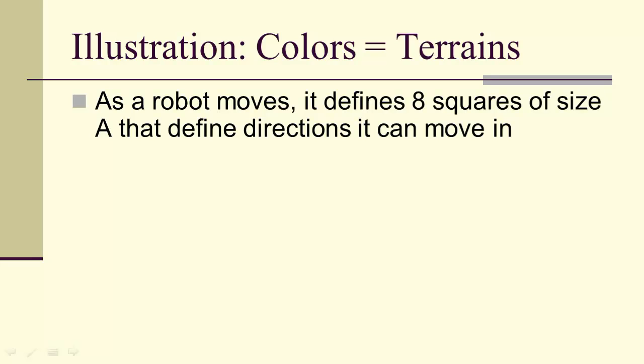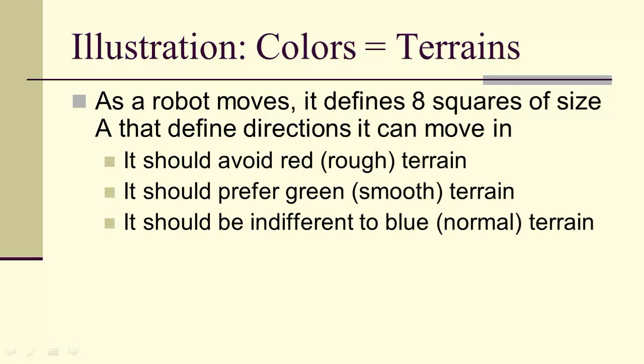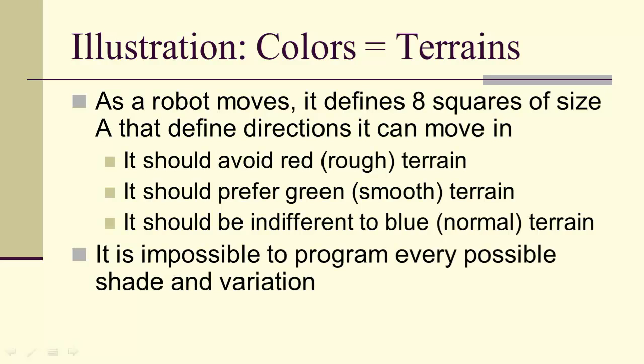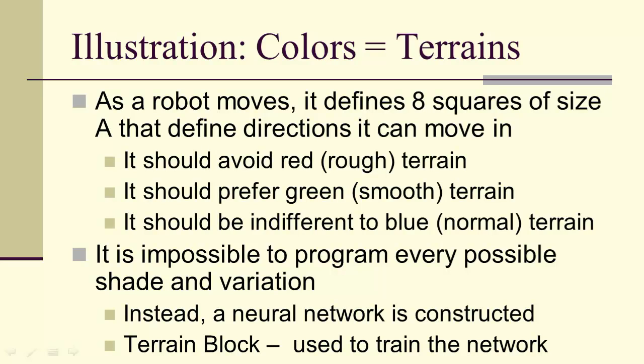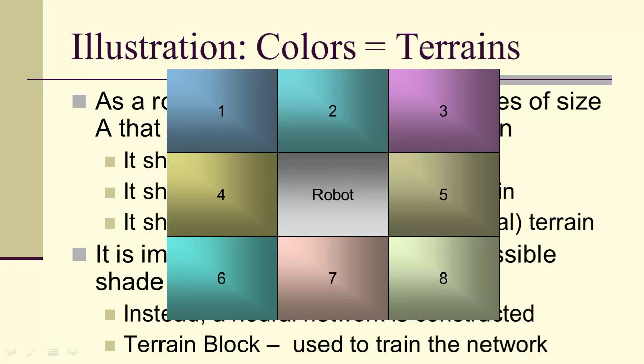Now let's look at an illustration of this. So as a robot moves, it's going to have, at any position, eight squares of size A to define directions it can move in. And we'll say, for the sake of this illustration, that it should avoid red. Red would correspond to very rough terrain. It should prefer green, and it should be somewhat indifferent to blue. Now it's impossible to program every possible shade and variation that could occur among these eight squares. So instead, they use a neural network. And they use terrain blocks. They use the rover's assessment of its surrounding terrain to train the network.